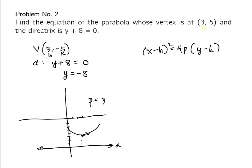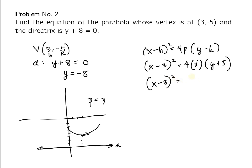Or you can subtract: -5 minus -8 equals positive 3. By substitution, the equation is (x - 3)² = 4 × 3 × (y - (-5)), which gives the standard equation (x - 3)² = 12(y + 5).